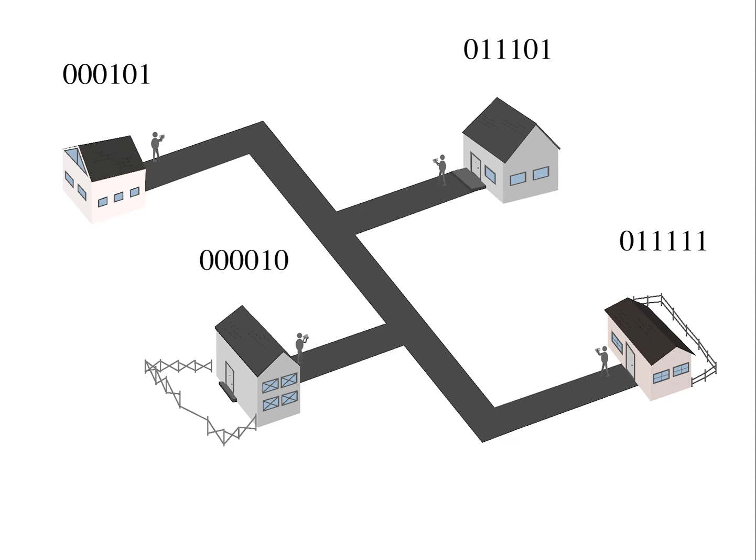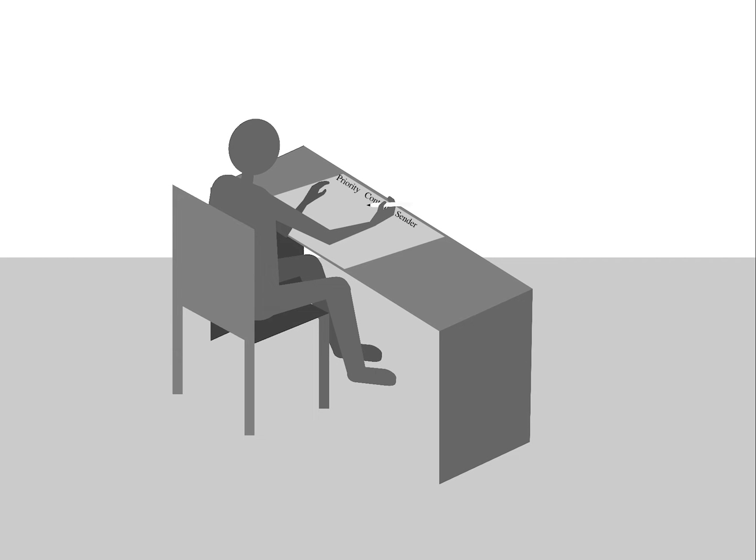These number plates need to be assigned and organized up front during the development phase of the car or village. Only ever one household can use a particular number. So the households need to say up front which information they would want to share. Then someone, and it is here a real person performing this task, has to decide on the importance of each part of information and assign the number plates.